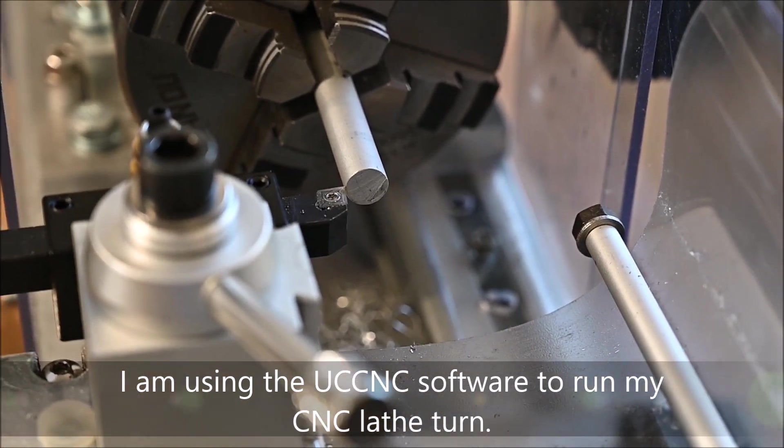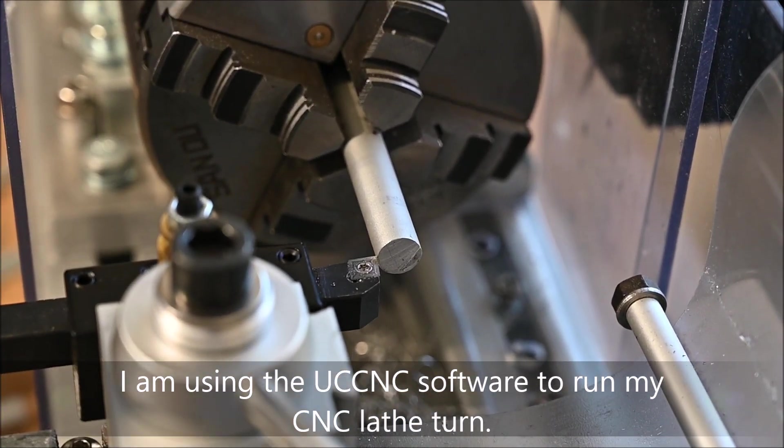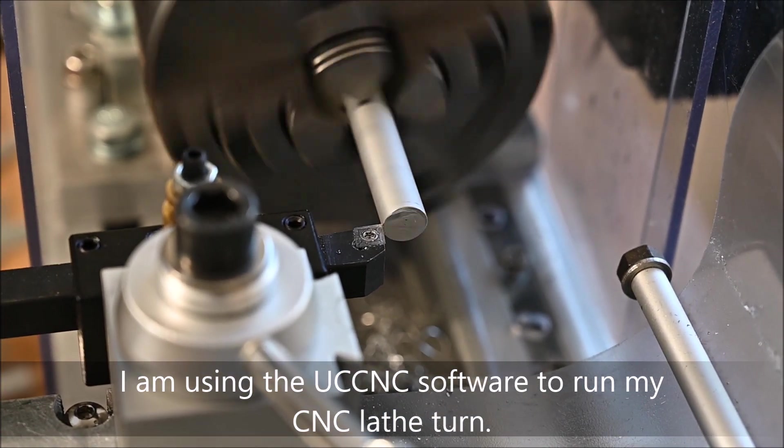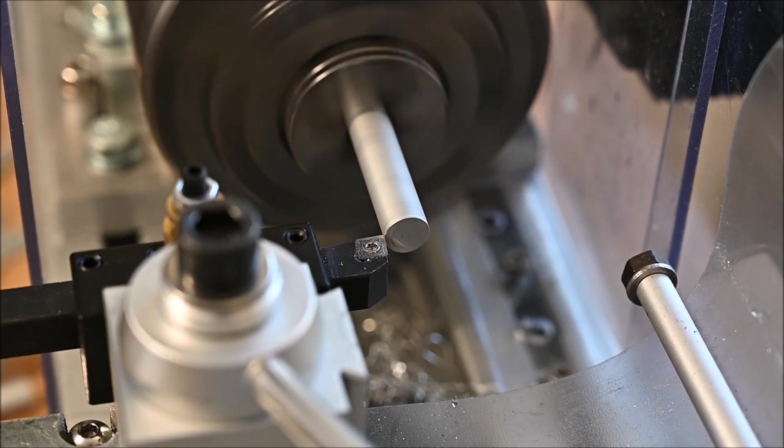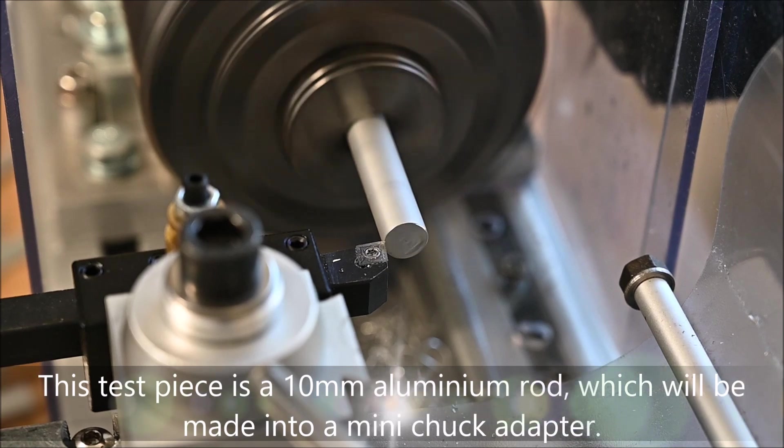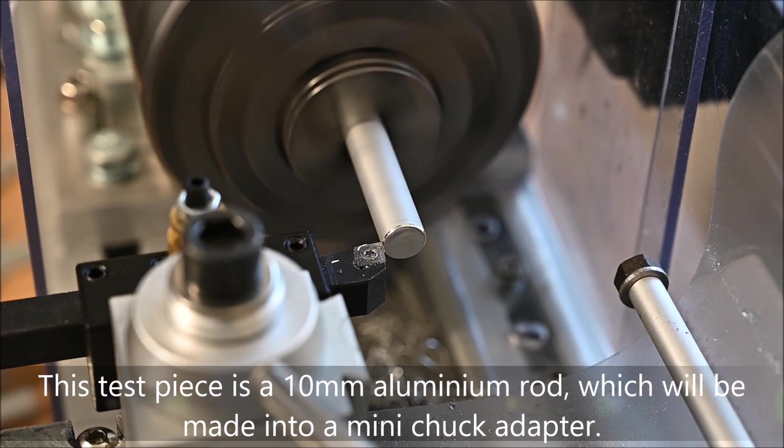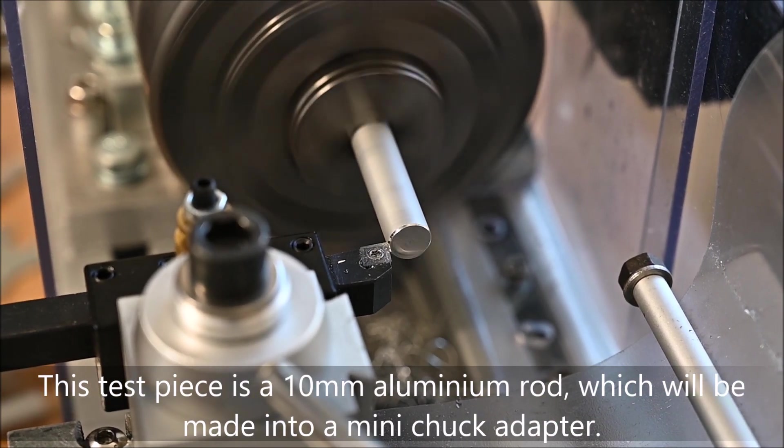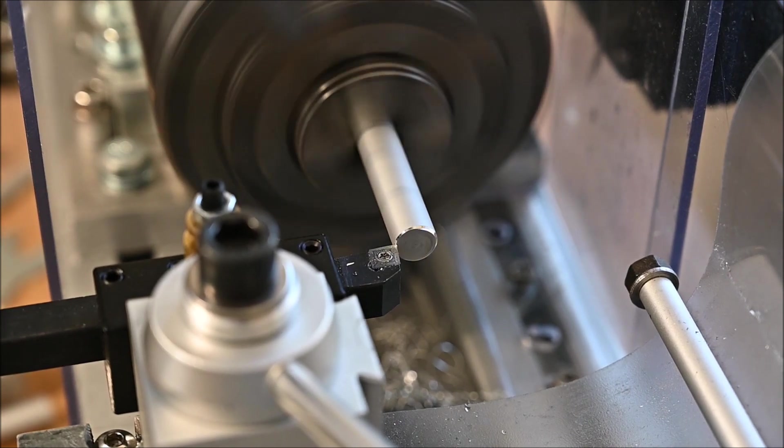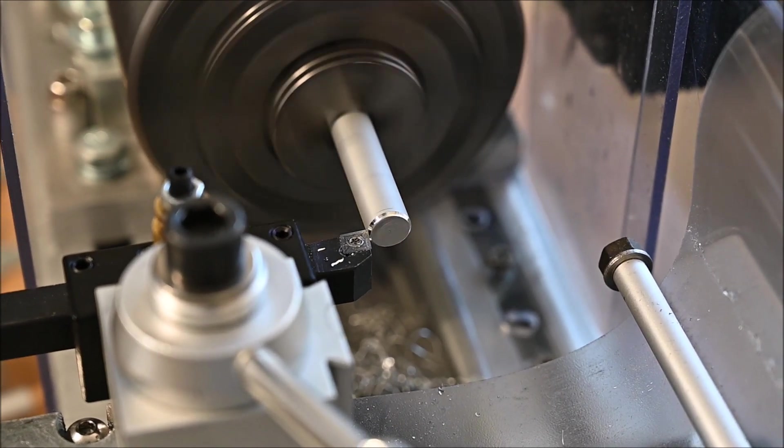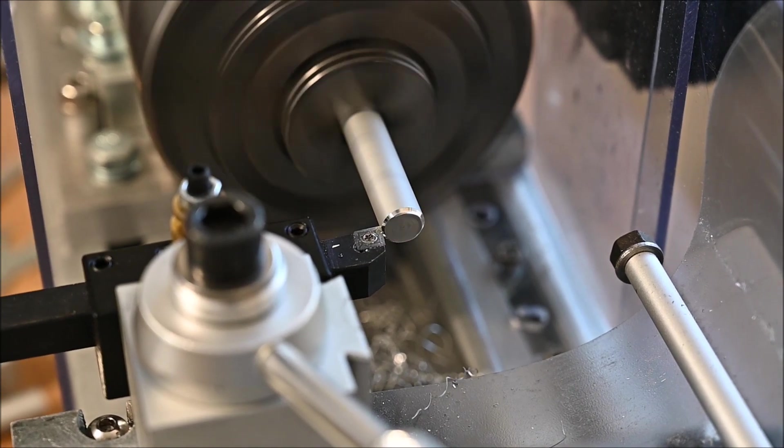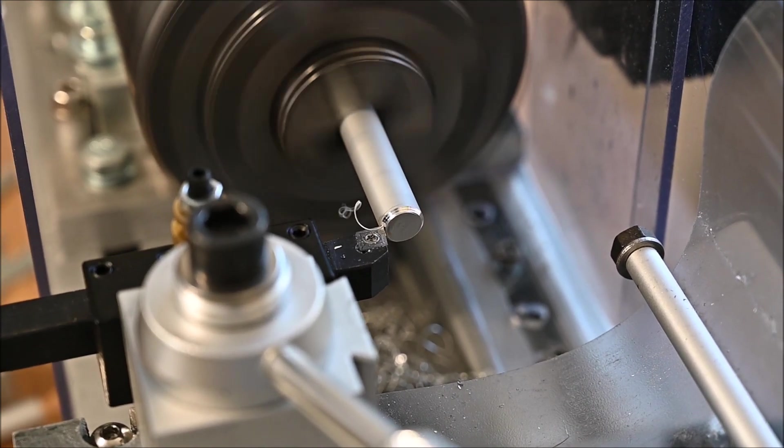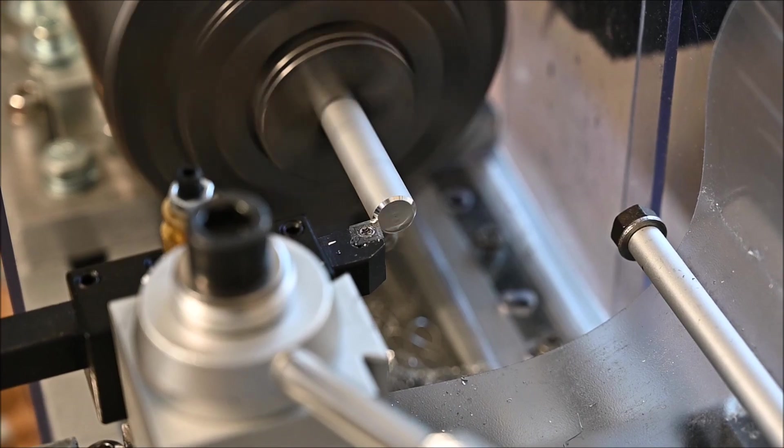Okay, let's start. The first operation will be facing and chamfering this end of 10mm aluminum rod, which I intend to use as a test adapter for a small chuck. I will show you once it's done.